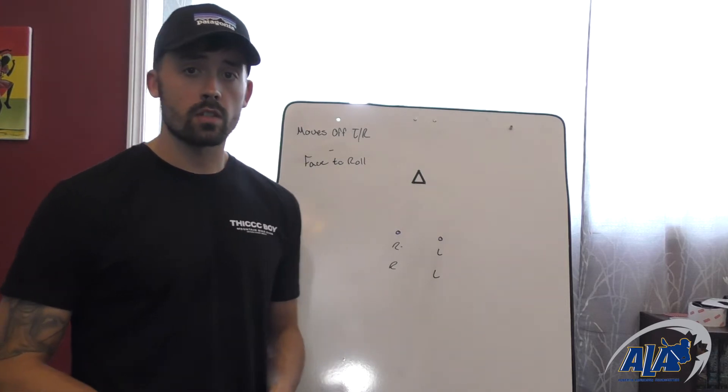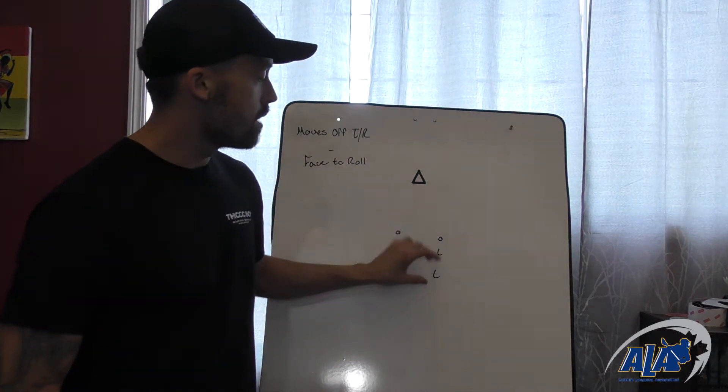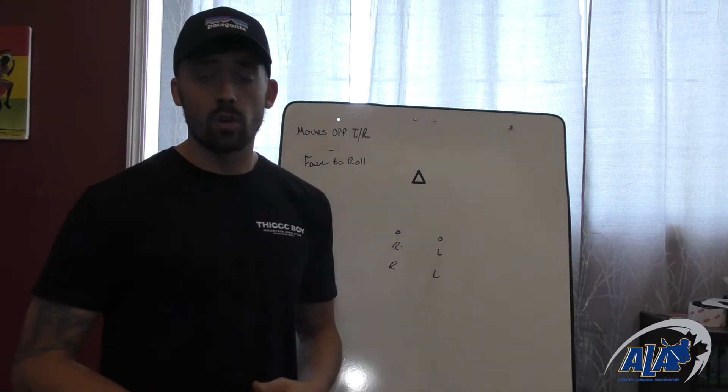For this drill setup, just like the other moves off timing room shooting drills, we'll have two cones here. We'll have right-handers in this line and left-handers in this line, with balls in both lines.